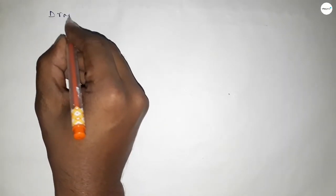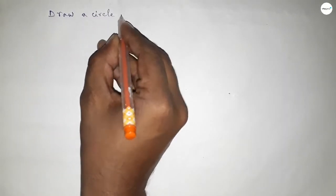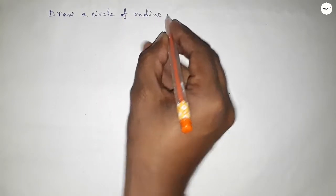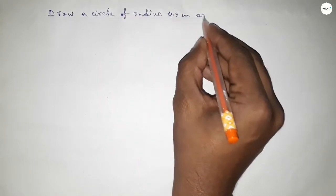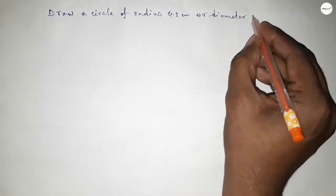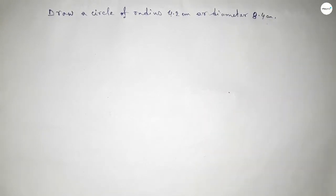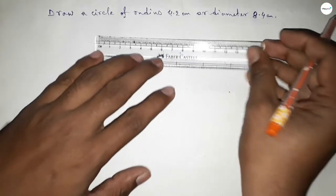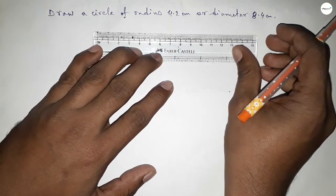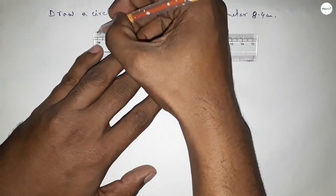Hi everyone, welcome to SSR Classes. Today in this video, we have to draw a circle of radius 4.2 centimeters or diameter 8.4 centimeters. Let's start. First, the radius equals half of the diameter.